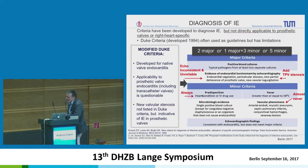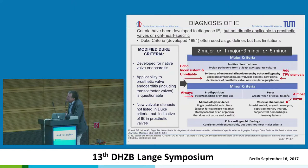It was David Jurak who created the Duke criteria in the year 1994, which were modified by Lee in the year 2000. If two major, one major and three minor, or five minor criteria are present, we talk about infective endocarditis.